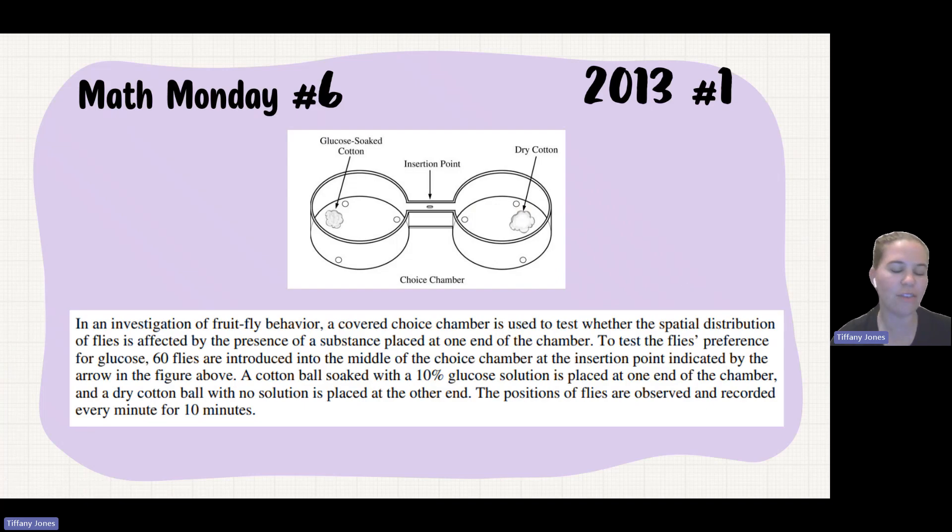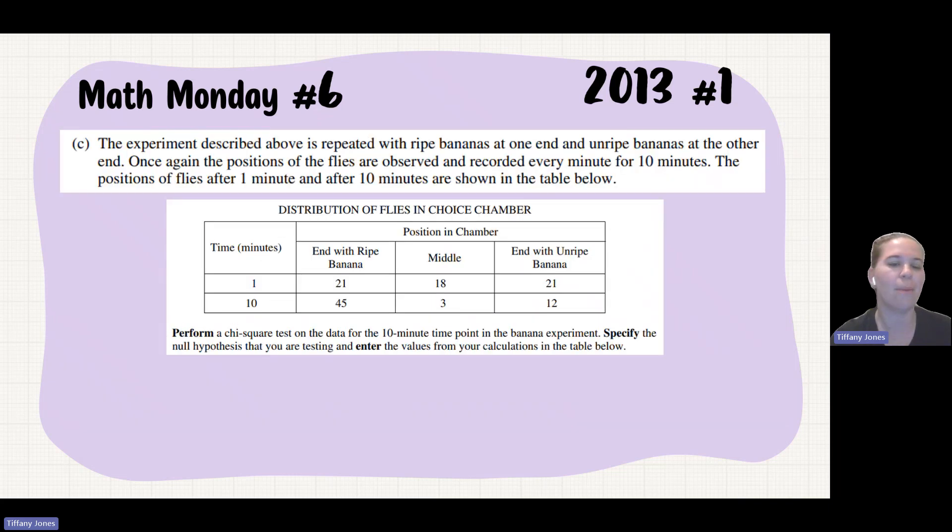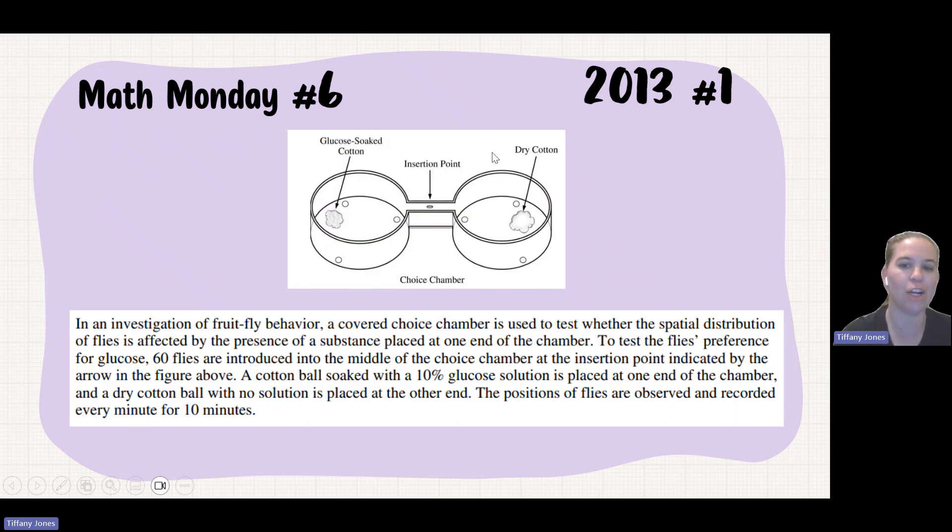They tell us there's an investigation of fruit fly behavior in a certain choice chamber, and we're testing the spatial distribution of those flies. They then give us information about this cotton ball and the dried cotton ball, which we're not really going to need for our question. The experiment is repeated with a ripe banana at one end and an unripe banana at the other end, and we're seeing how the fly responds to that.